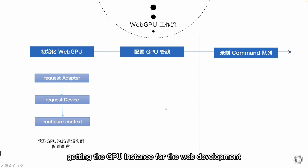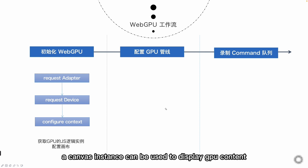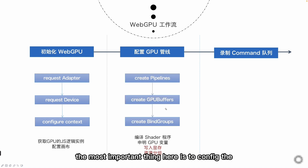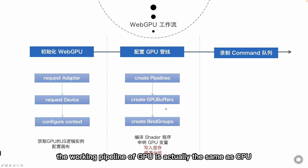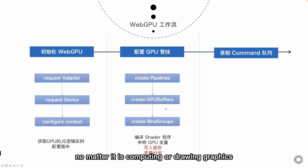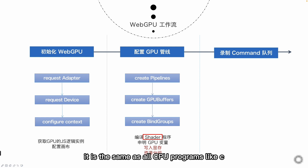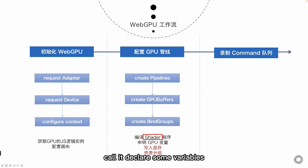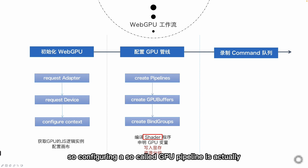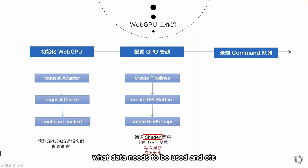In addition to getting the GPU instance for web development, we may still need to configure the canvas. A canvas instance can be used to display GPU content. After getting the GPU instance, we can actually start operating the GPU. The most important thing here is to configure the pipeline of the GPU. Simply put, the working pipeline of GPU is the same as CPU — no matter if it is computing or drawing graphics, the GPU also needs to run related code and programs. We generally call GPU code a shader. It is the same as all CPU programs like C, Java, Python, or JavaScript — we also need some code logic, declare some variables, define the input and output, and so on. So configuring a GPU pipeline is actually telling the GPU which shader programs we want to run, what input variables and what data needs to be used. We'll introduce it step by step in the following video.